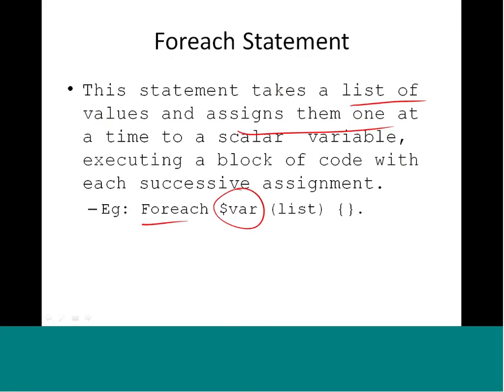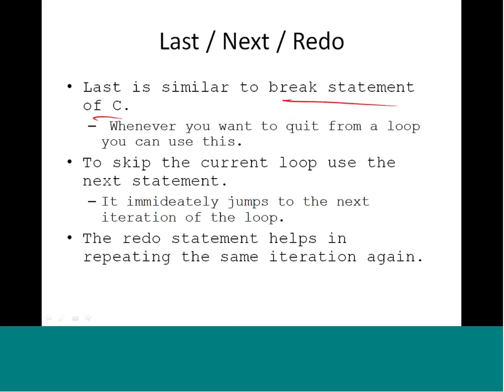The `last` statement is similar to the `break` statement in C — if you want to exit a loop in the middle, use `last`. If you want to skip the current loop iteration and go to the next one, use `next`. The `next` statement exits the current iteration but stays in the loop and moves on to the next value, continuing the loop execution.